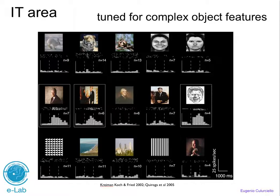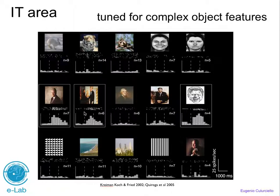Finally, in the inferotemporal cortex, at the edge of the ventral pathway, there may be cells that respond to very complex objects. Experiments by Christoph Koch, Kreiman, and Fried found a neuron in a monitored surgical patient that responded only to Clinton's face — the so-called 'Clinton neuron.' It didn't matter whether it was a cartoon or a photo, and showing any other image or person produced no response. This means that IT contains cells tuned to highly complex objects like the face of a frequently seen person.